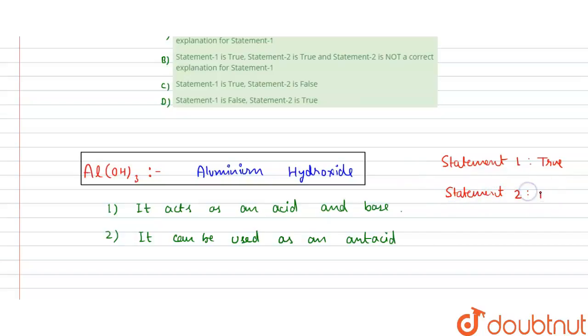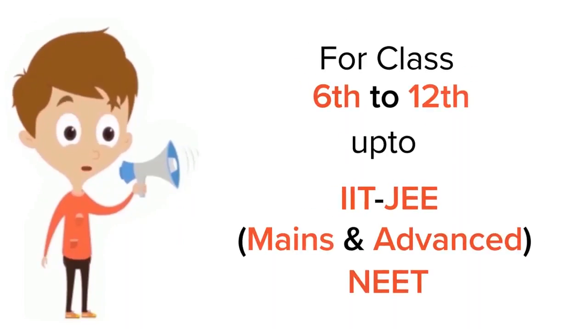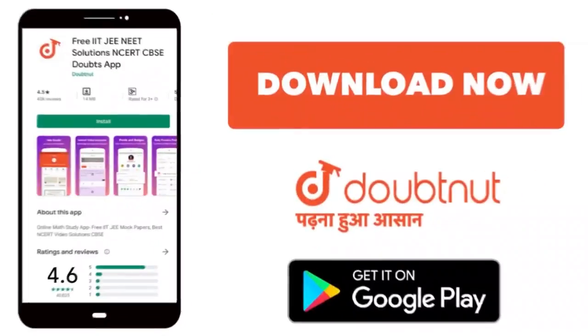Now which of the following options says true and then false? First is true, second is false, so C is the correct answer. Thank you. For class 6 to 12, IIT JEE and NEET level, trusted by more than 5 crore students, download Doubtnut app today.